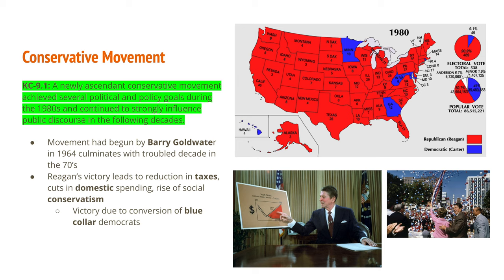A newly ascending conservative movement achieved several political and policy goals during the 1980s and continued to strongly influence public discourse in the following decade. The cause for this conservative movement traces back to Barry Goldwater's 1964 presidential run, which first promoted this political ideology. The troubles of the 70s — Watergate, the pardoning of Nixon, and the Iran hostage crisis — led American voters to turn away from the Democrats' liberal programs toward this new conservative ideology. Reagan's victory led to a reduction in taxes, cuts in domestic spending from the Great Society of the 1960s, and a rise of social conservatism.